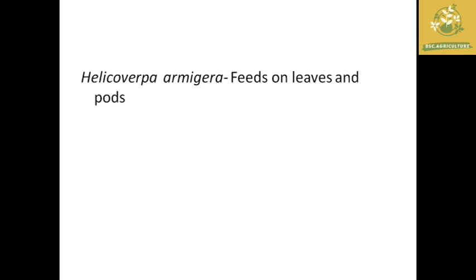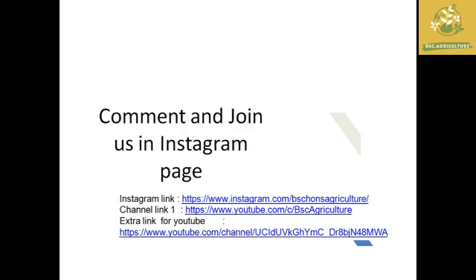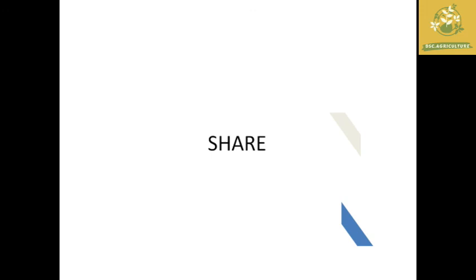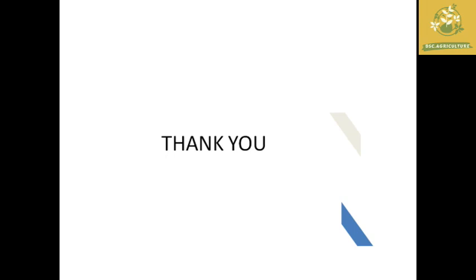The next pest is Helicoverpa armigera, which feeds on leaves and buds of different parts. For detailed information on Helicoverpa armigera, you can see the playlist for other major crops where it has been covered in detail. Lecture notes are available in the description. If you like the video, like, share with friends, subscribe to BSc Agriculture, and hit the bell icon to get regular updates. Thanks for watching.